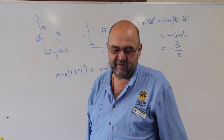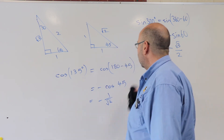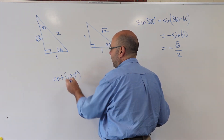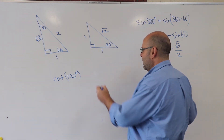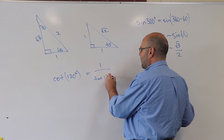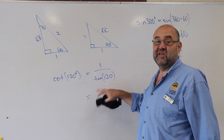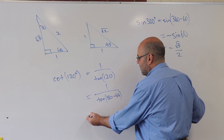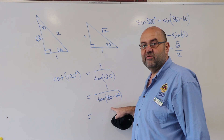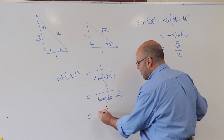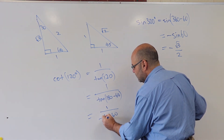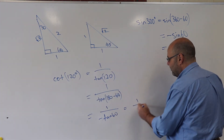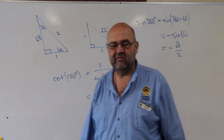Question 7 uses reciprocal ratios. For cot(120): cot is 1 over tan, so that's 1 over tan(120). Now 120 is 180 minus 60, in the second quadrant where tan is negative. So it becomes 1 over negative tan(60). Tan(60) is opposite over adjacent = root 3. So cot(120) = 1 over negative root 3, which you can then rationalize the denominator and simplify from there.